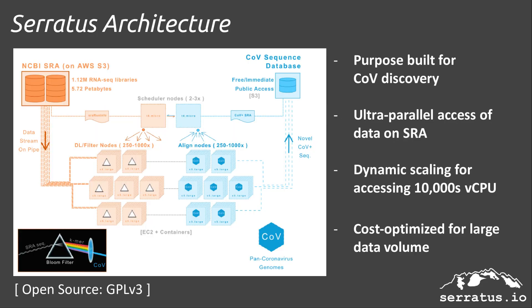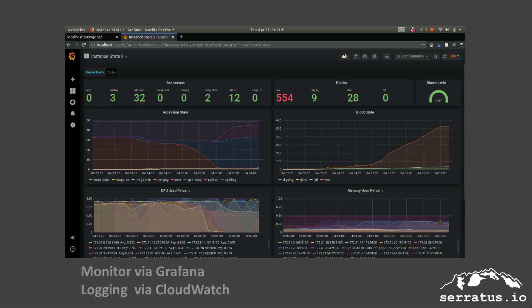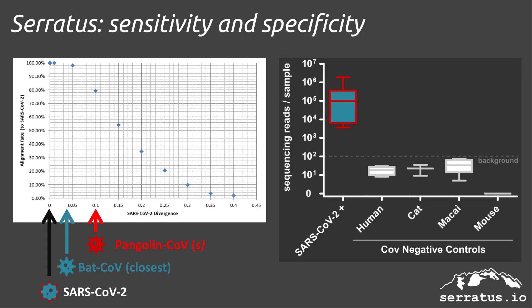To accomplish this, we have developed Serratus, an ultra-high-throughput RNA sequence aligner based off of Amazon Web Services' cloud computing. Serratus is now operational, scaling to 250 nodes with real-time tracking of our cluster performance. Most importantly, our bioinformatics analysis is validated to be sensitive and specific for the detection of novel coronaviruses.